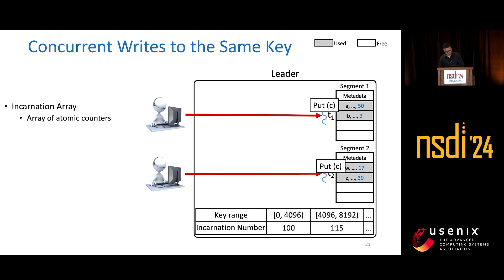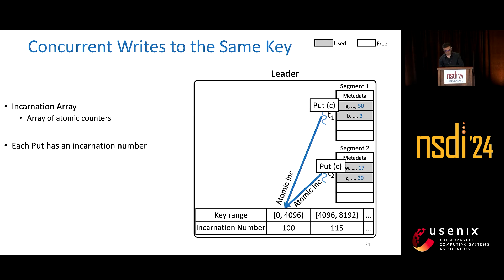To do this, before committing the key entry to the segment store, we have something called an incarnation number. We divide the entire key space into multiple ranges, and each range we assign an atomic counter to, which is called an incarnation counter. Whenever a thread receives a put request, first it gets the incarnation number for that specific key range, increments it atomically, and adds this incarnation number entry to the segment store as well.